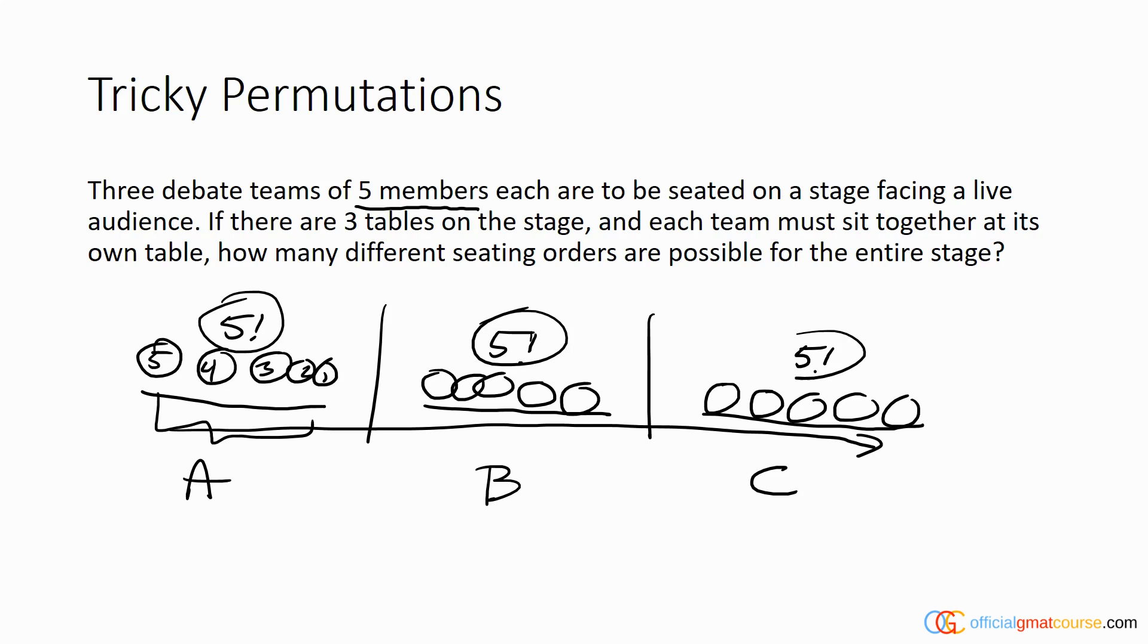But now we can also reorganize the groups as well. We could flip-flop group B and group C, the same thing with A and B and C. Basically, how many ways can we reorganize the groups themselves? Well, we have three groups.